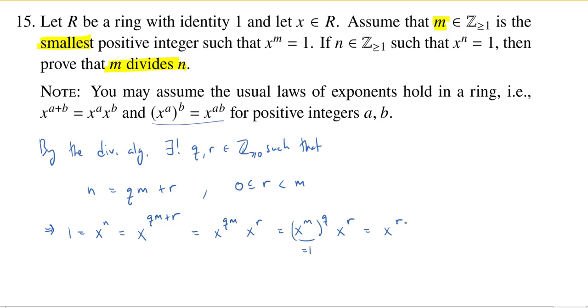And now here's the beauty. x to the r is equal to 1. Well, so what? Well, what did we know about r? r is less than m. So, what did we know about m? m is the smallest positive integer such that x to the m is equal to 1. So if r is a positive integer, we have a contradiction.